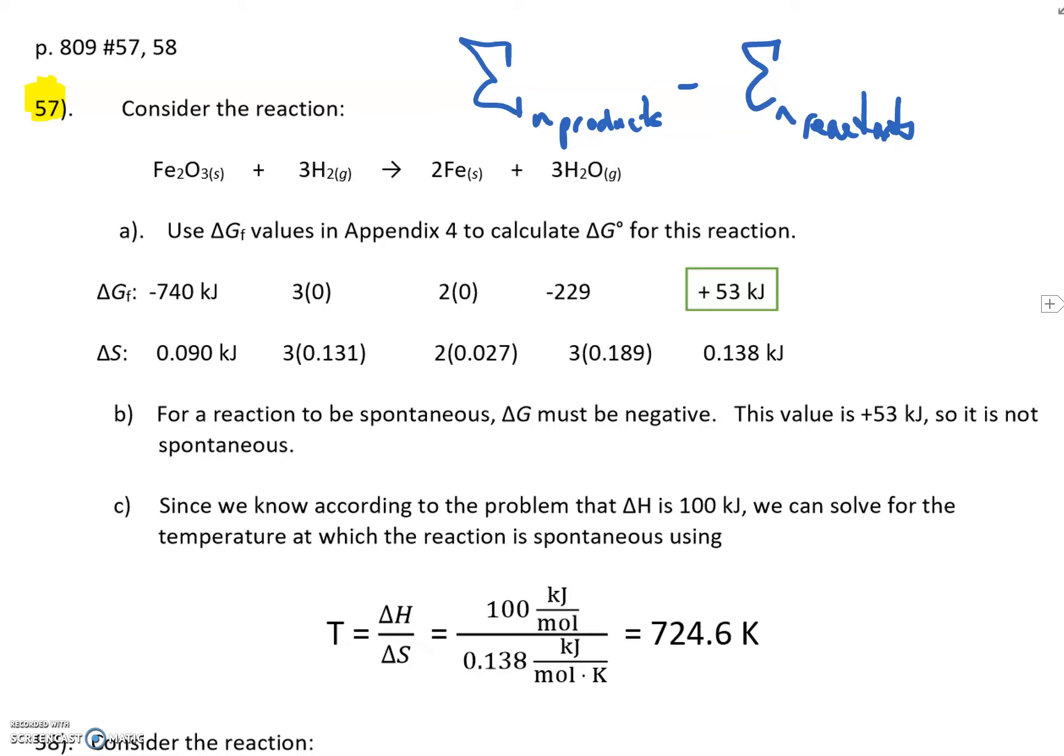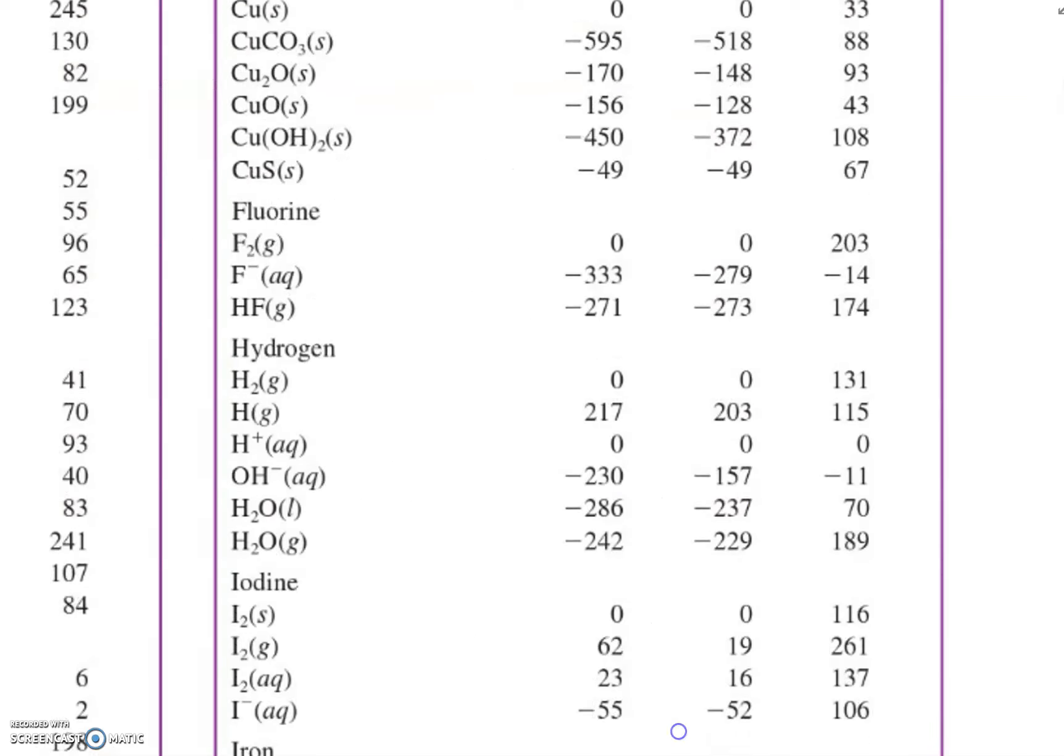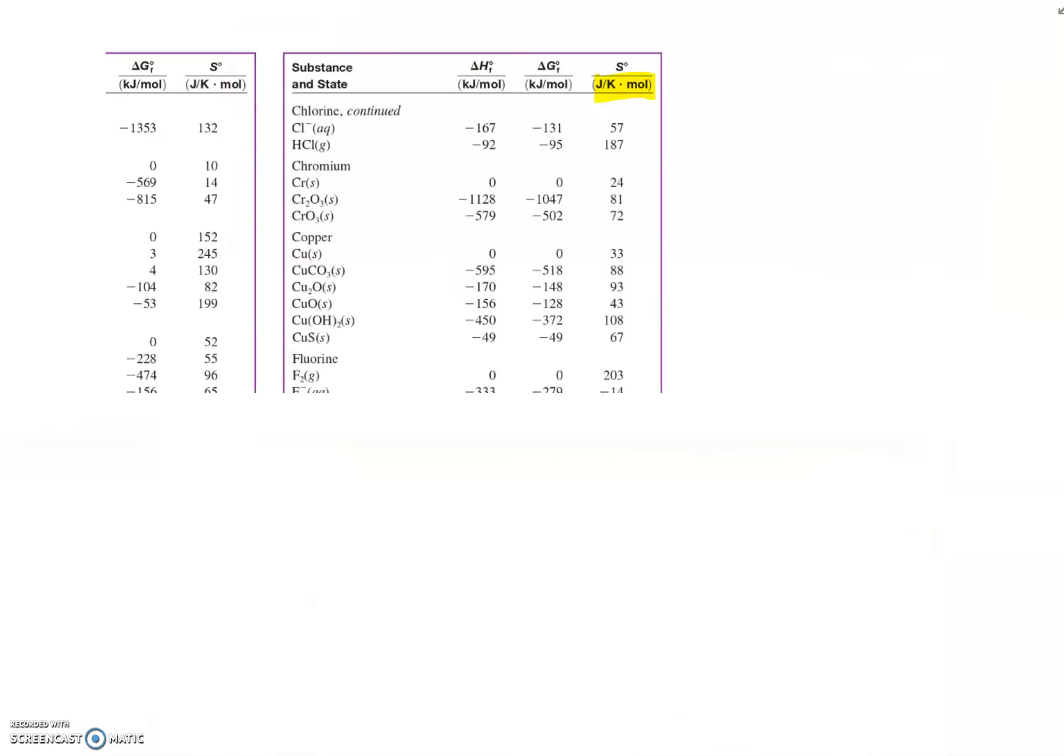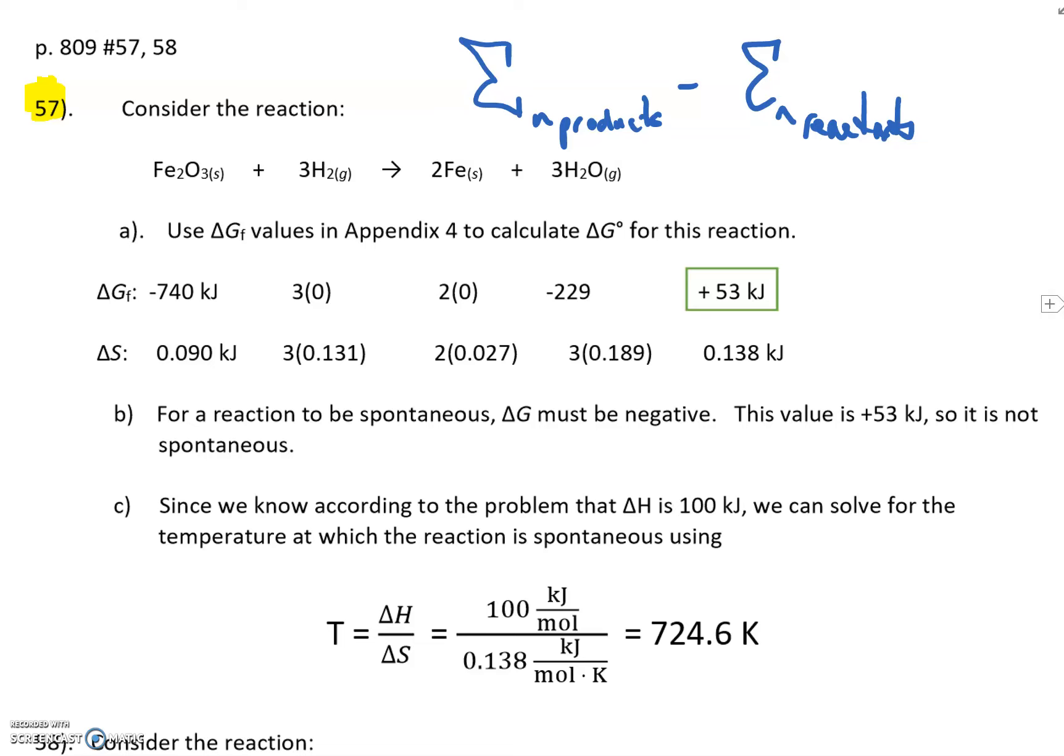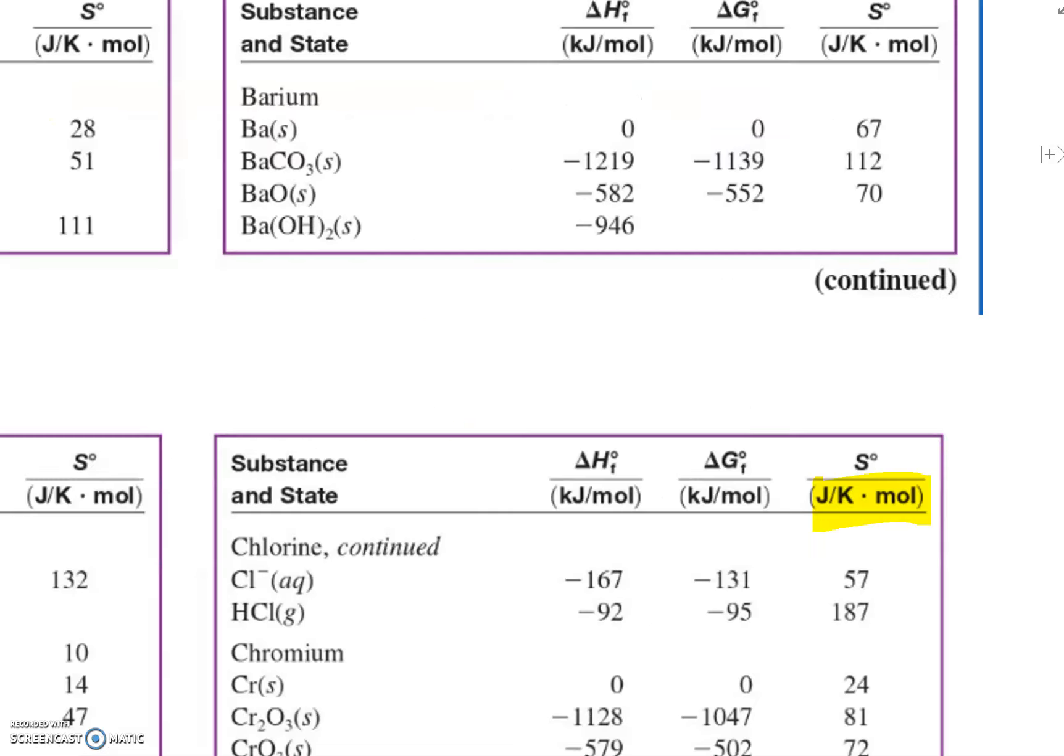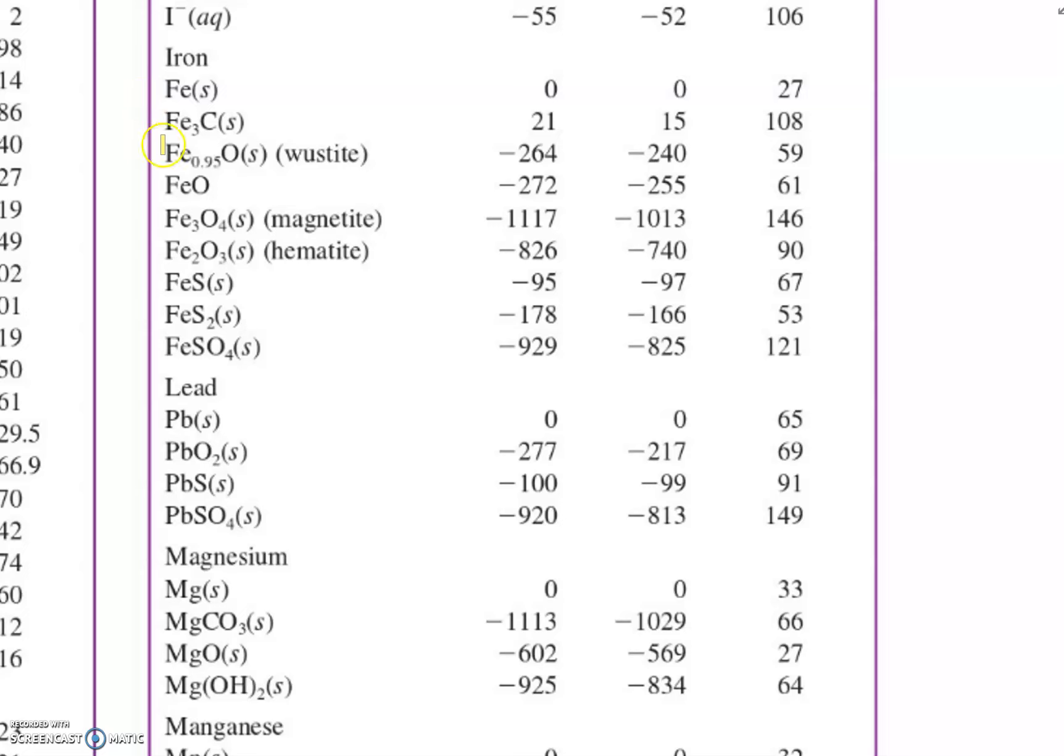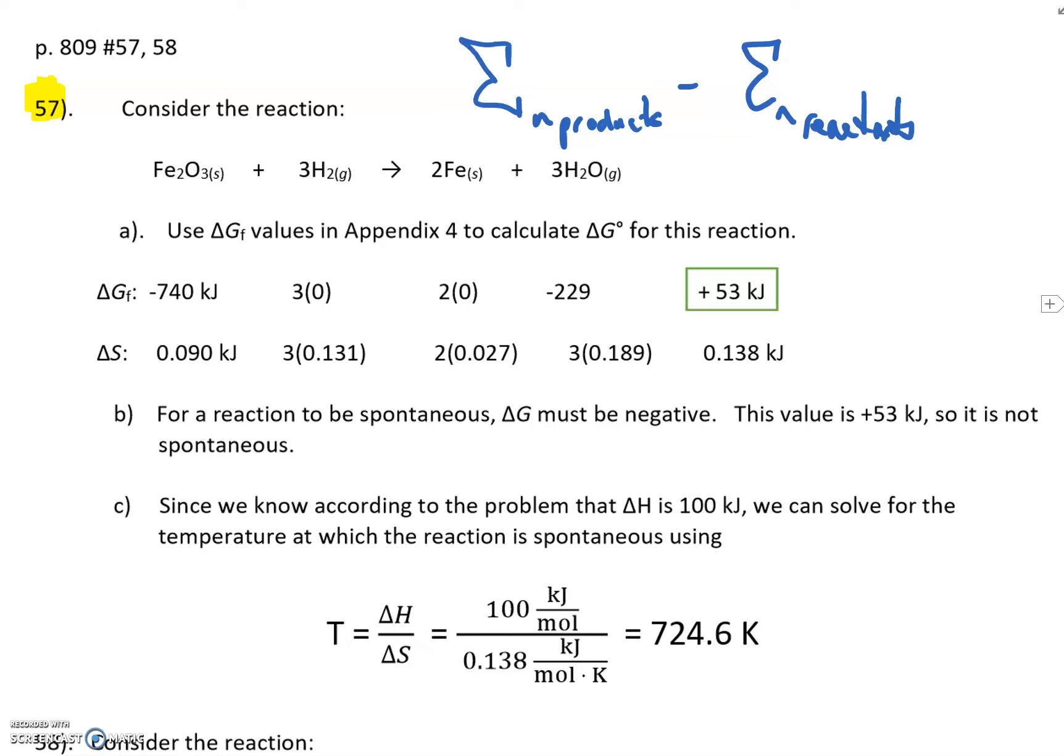Got a value for delta G of positive 53 kilojoules, and a value of delta S of 0.138 kilojoules. Be careful, because all of these values for delta S are listed in joules. I didn't mean to cross that out. Joules per kelvin mole. So you want to put those into kilojoules by dividing by 1,000. Okay? So that's where all these come from. I'll give you an example here for FE203.